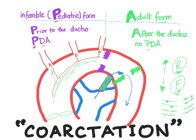To summarize: in the pediatric form, the coarctation is prior to the ductus and is associated with a patent ductus arteriosus — the main problem being lower extremity cyanosis. In the adult form, the coarctation occurs after the ductus with no PDA — the main problem being a discrepancy in blood pressure: hypertension in the upper half and hypotension in the lower half.